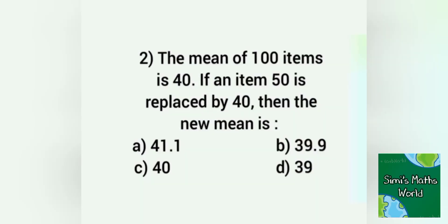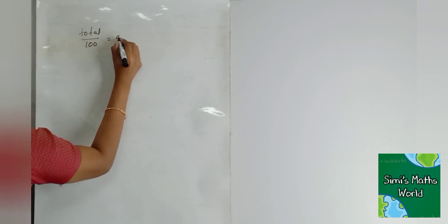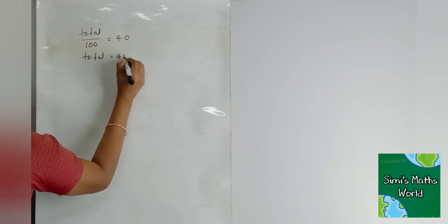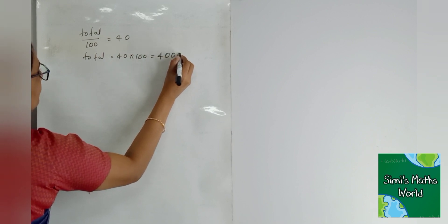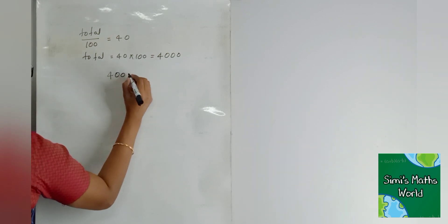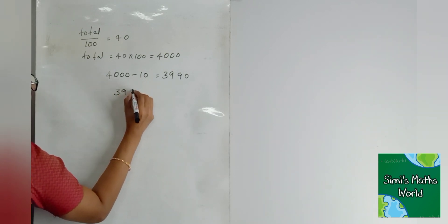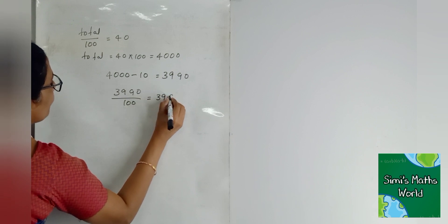Second question: The mean of 100 items is 40. If an item 50 is replaced by 40, the new mean is — option A: 41.1, option B: 39.9, option C: 40, option D: 39. Solution: total equals 40 into 100 equals 4000. Replace item 50 with 40, so total decreases by 10. New total equals 3990. New mean equals 3990 divided by 100 equals 39.9. Answer: option B.